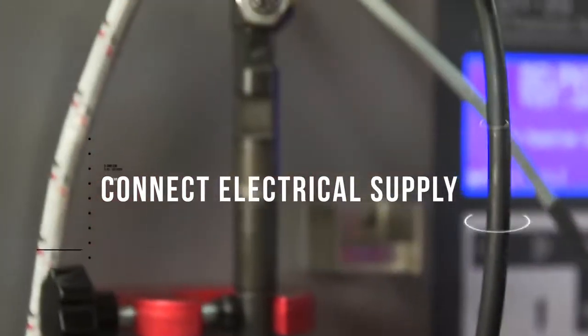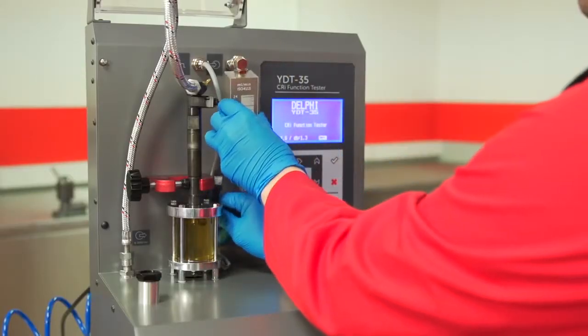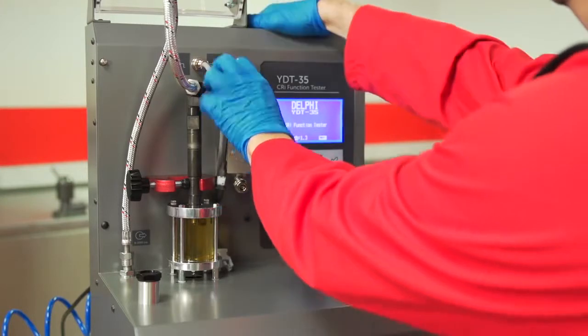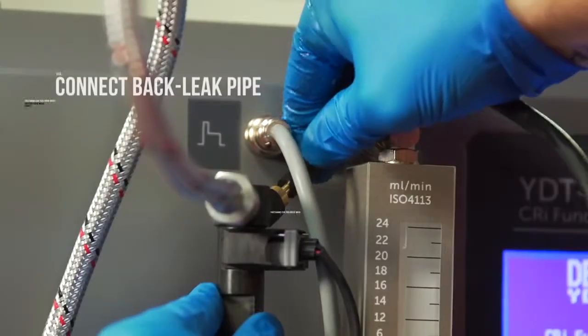Connect an electrical supply to the injector. Here we are using the optional back leak measurement unit which can be purchased separately. To complete setup, connect the back leak pipe.